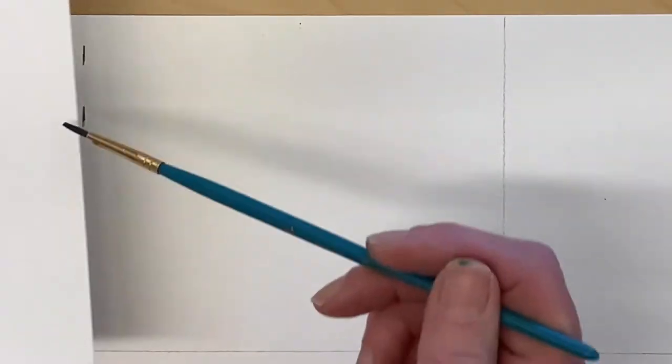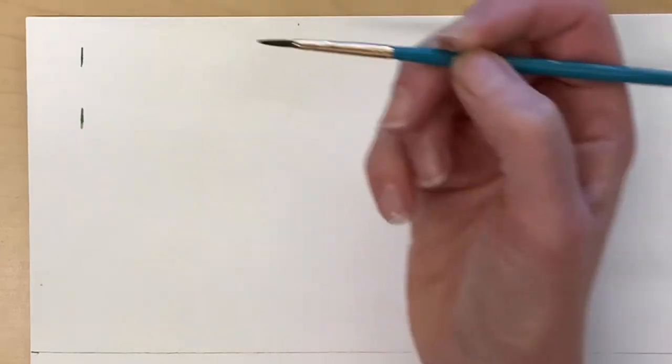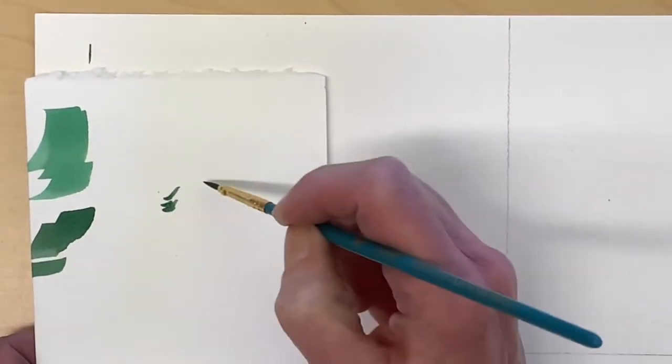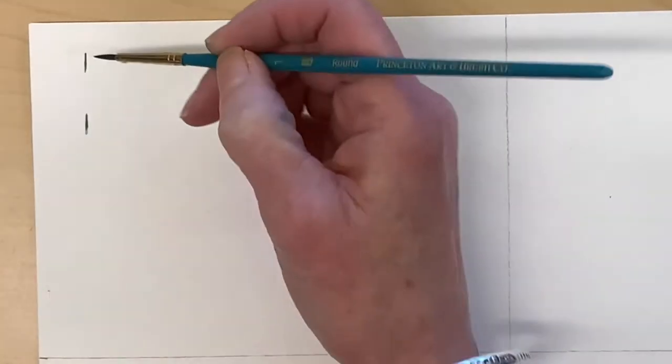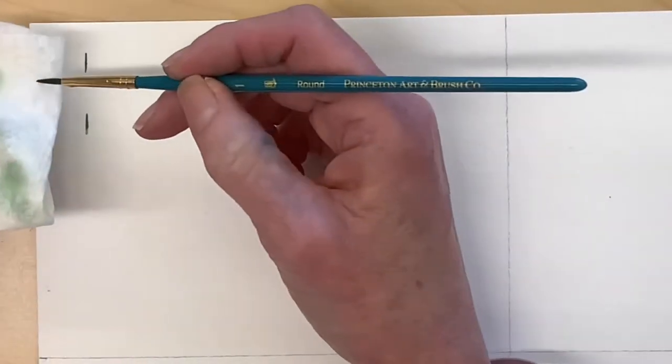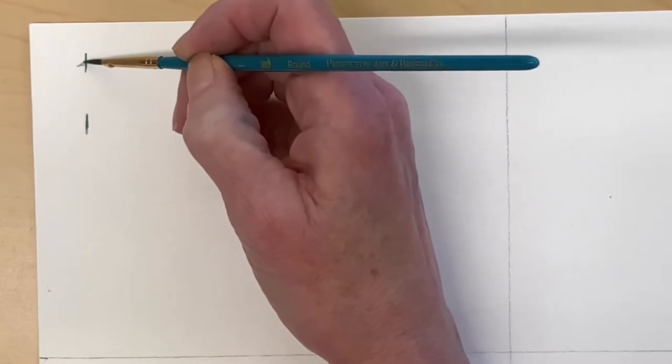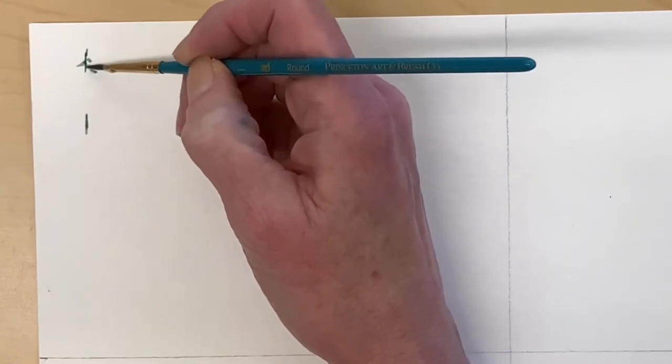Now I'm using my number one detail brush, picking up some paint about a medium value, and I'm going to make some marks like this. I'm starting at the top of the tree, dabbing off my paint so I don't have too much since these marks are quite small.